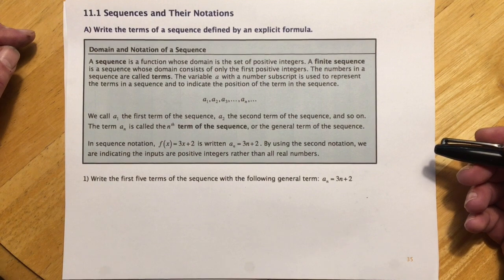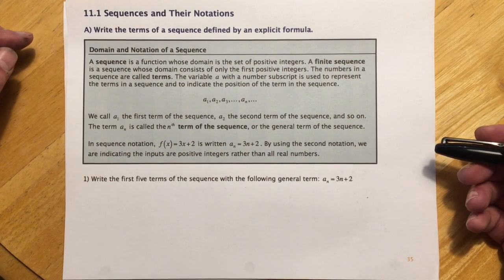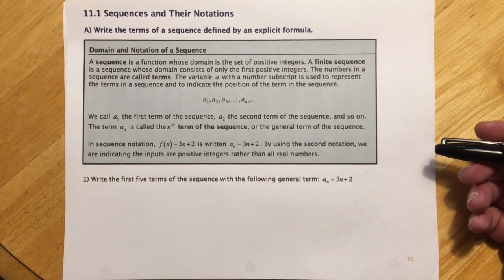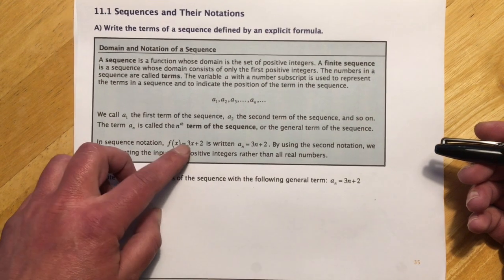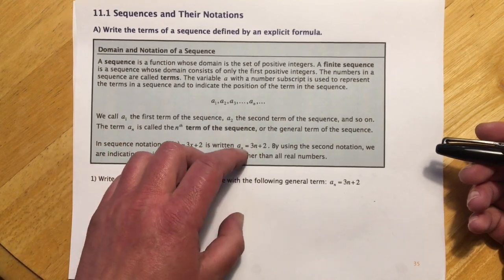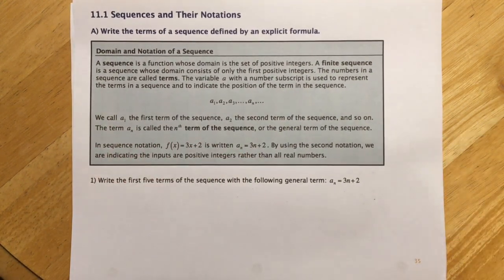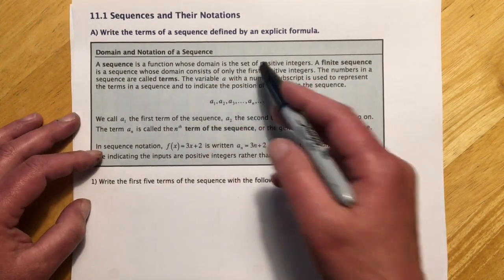By using the second notation, we're indicating the inputs are positive integers, rather than all real numbers. So over here, I can put in negative values, but in here, I can only put in positive numbers, because that's the definition for the domain of a sequence.